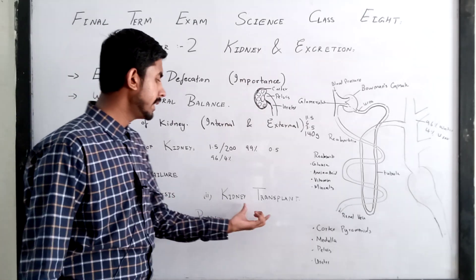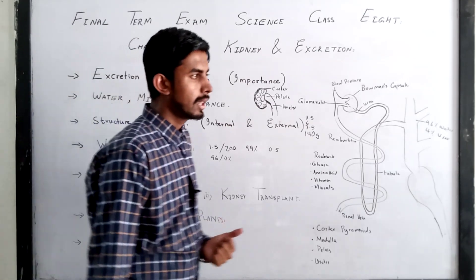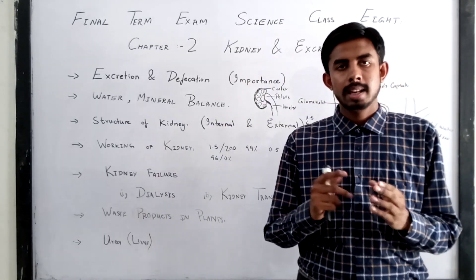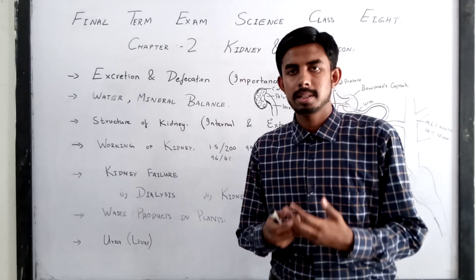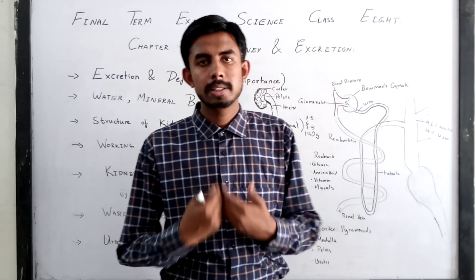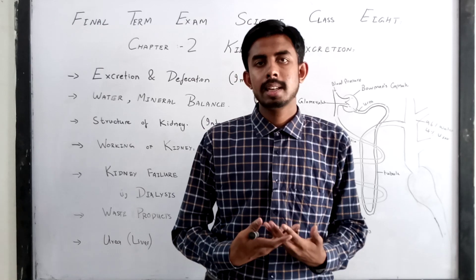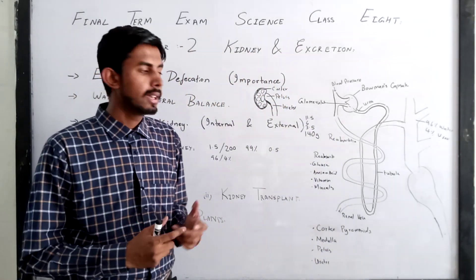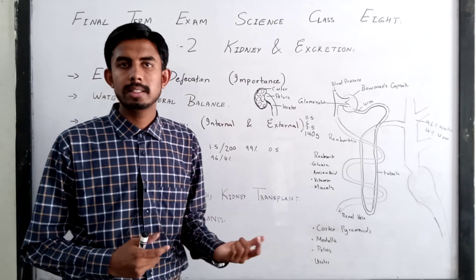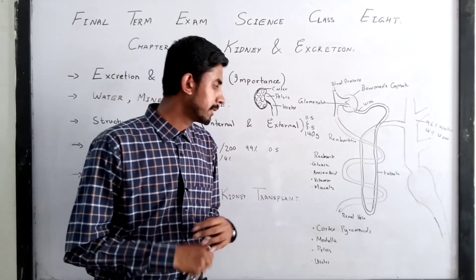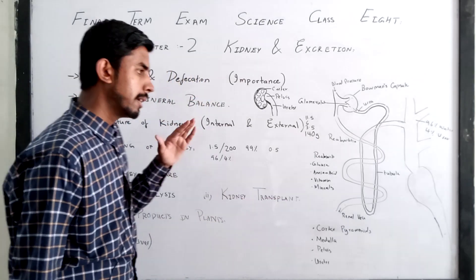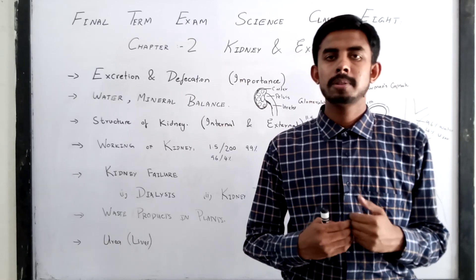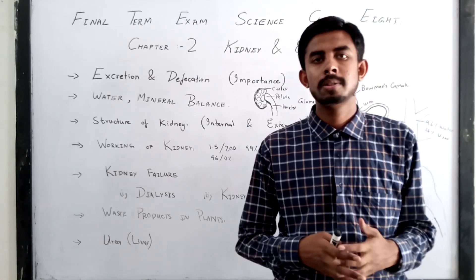The second way is kidney transplant. We have two kidneys but can function with one, so a person can donate a kidney to someone else. The condition is that the donor's kidney tissue must match the recipient's. The patient will also need medicines so that the tissue can be accepted, and the transplanted kidney will perform the filtration function normally.